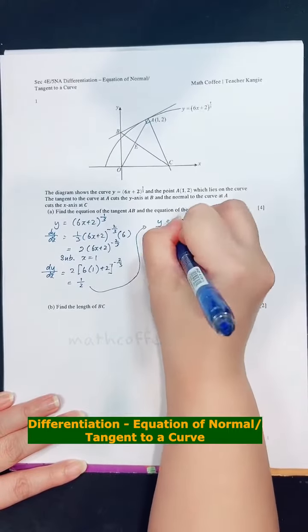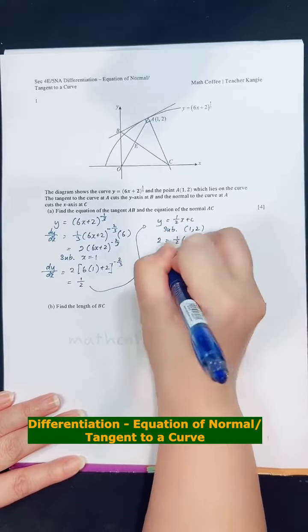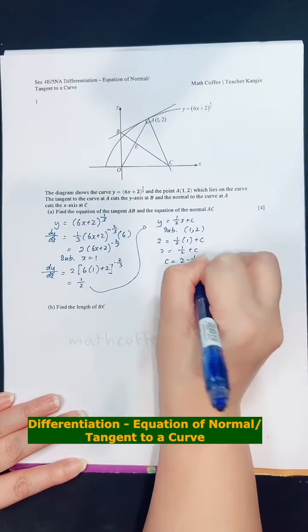And the only point we have is the 1, 2. So just substitute 1, 2. So x is 1, y is 2. So 2 equals to half times 1 plus c. 2 equals to half plus c. c equals to 2 minus half.